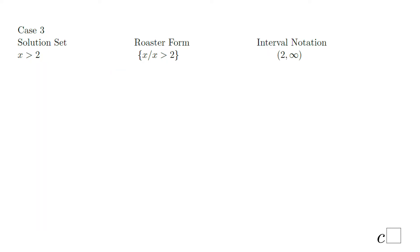Case three: x greater than two. The solution set — x when x greater than two. You notice now, instead of a bracket, we have a parenthesis at two, because we don't have the equal sign anymore. Then comma, infinity. So if you do not have the equal sign, you have to use parentheses.